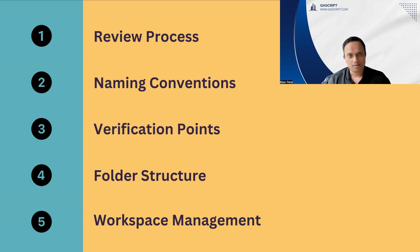The next best practice talks about naming conventions. Any project or automation code which you are writing should follow naming conventions. It doesn't matter what naming conventions you follow — either the industry standard camel case, which you write for all the different methods or class names, or you can follow the same in Tosca as well. It depends on your project and your team, but if you are following a proper convention, make sure that it is consistent across the project and all team members are also following it.